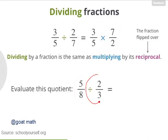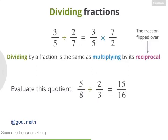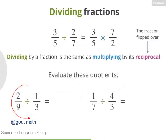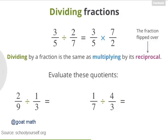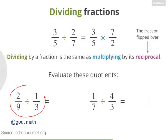Try another example. What's 5 eighths divided by 2 thirds? If you get stuck, click over here. Nicely done! So 5 eighths divided by 2 thirds is the same as 5 eighths times 3 halves, which is 15 sixteenths. Try a few more examples. What's 2 ninths divided by 1 third and 1 seventh divided by 4 thirds? Right! 2 ninths divided by 1 third is 6 ninths, and you can simplify this fraction, writing it as 2 thirds. And 1 seventh divided by 4 thirds is 3 twenty-eighths.